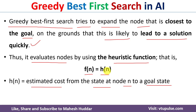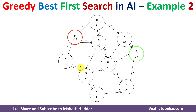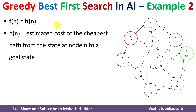We will understand the greedy best first search algorithm with the help of an example. We have been given a graph where P is the initial state and S is the goal state. We need to apply the greedy best first search algorithm to identify a path from the initial state to the goal state, as well as find the path cost. As discussed, we use f(n) = h(n), where h(n) is the estimated cost from the current node to the goal node.